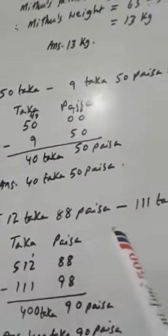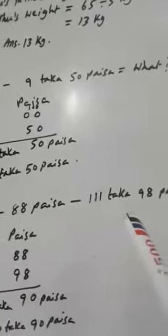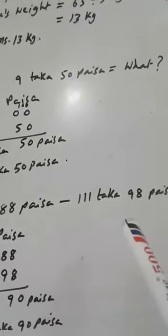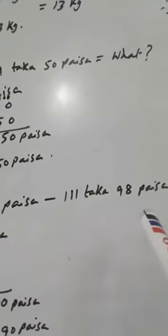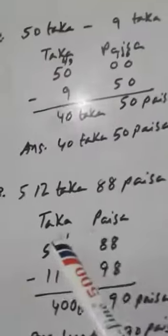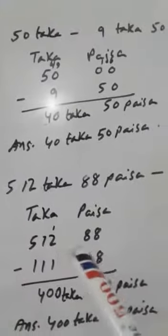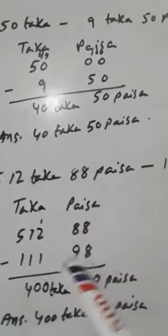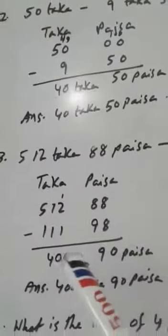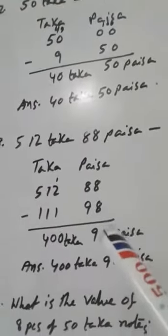512 taka 88 paisha minus 111 taka 98 paisha. Write like this: taka and paisha columns — 512 taka 88 paisha, minus 111 taka 98 paisha.